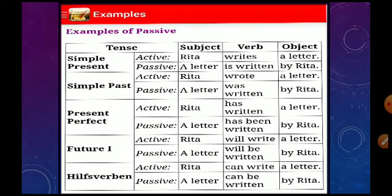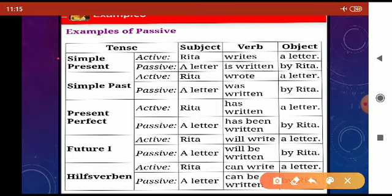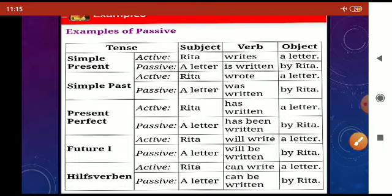As we see here in this table, we have got four columns: the tense column, the subject column, the verb column, and the object column. Now one by one we will discuss these.